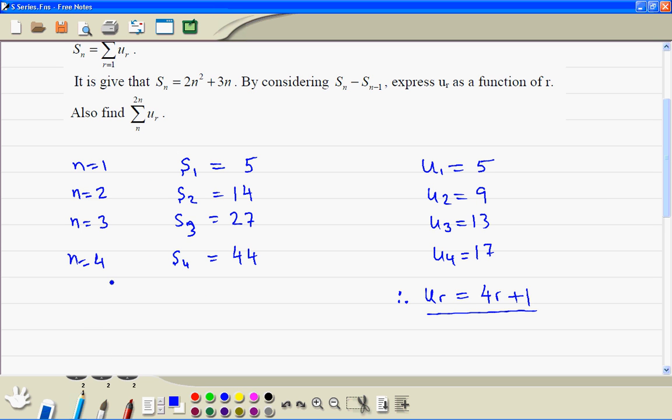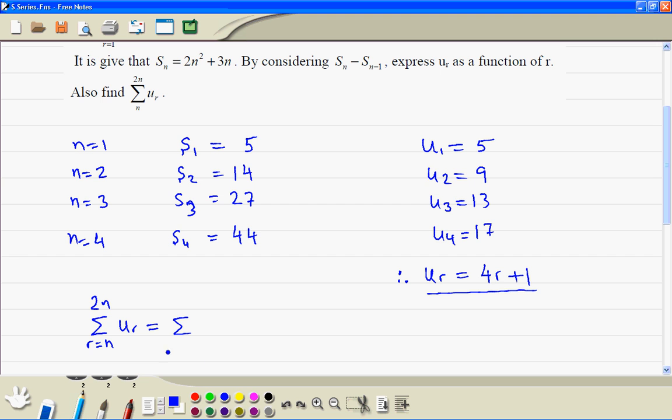Now we're going to do the second part, the sum where r starts from n up to 2n. This is going to be equal to, if we do the sum taking r from 1 up to 2n, minus take r from 1 up to n minus 1, because we need n here.